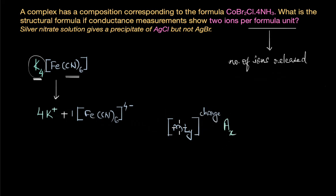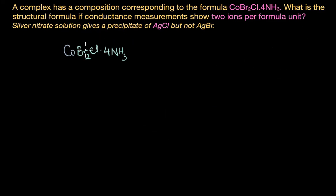Now coming to the main part: what are these 2 ions for the composition given here? The formula given to us is CoBr₂Cl·4NH₃. This means we have 1 cobalt ion as central metal ion, and the ligands can be 2 Br⁻ ions, 1 chloride ion, and 4 ammonia molecules. These ligands can be directly coordinated to the cobalt ion and one of them can be ionizable. So let's look at the different possible structures that we can get.